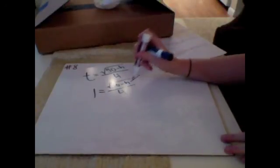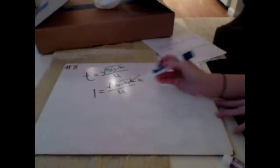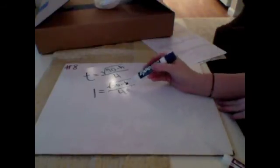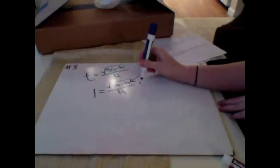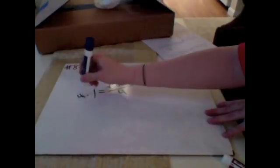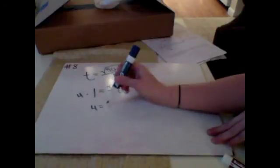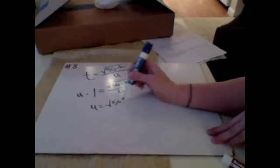And now, my goal here is I'm going to solve for my h. So if I'm going to solve for my h, I've got to isolate the variable. So the first thing I'm going to do is I'm going to multiply both sides by 4, leaving me with 4 equals the square root of 50 minus h.